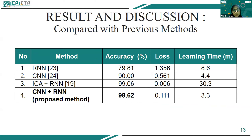The optimal model in this research was compared with previous BCI research. Research one and two resulted in accuracies of 79.81% and 90%, and both had not used a multi-channel handling method. Research three, using the same data, used ICA as a dimension reduction method for multi-channel handling and RNN as identification, obtaining an accuracy of 99.06%, while our research resulted in almost the same accuracy of 98.62%. The small difference is sometimes affected by architecture or random number generation. Additionally, the proposed method is much faster without sacrificing accuracy because CNN generates less data for RNN to process.